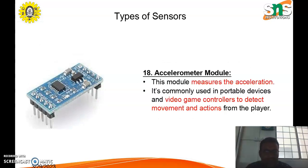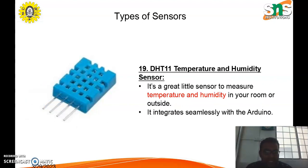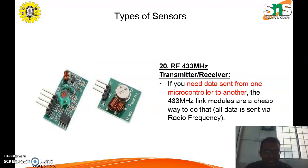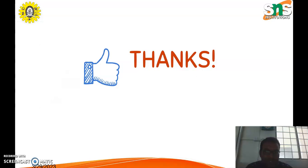The next type is the accelerometer module, which measures acceleration. It is commonly used in portable devices and video game controllers to detect movement and actions. Next is the temperature and humidity sensor, used to detect temperature and humidity in a room, integrating seamlessly with the Arduino board. Next is the transmitter and receiver sensor. If you need to send or receive data from a microcontroller, you can use the RF433MHz and NEO module to send data using radio frequency.